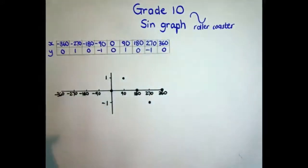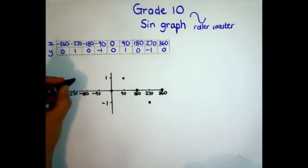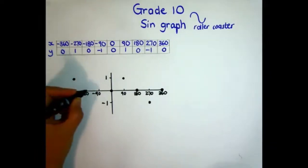Plotting the negative side: negative 360 is on 0, negative 270 is on 1, negative 180 again on 0.